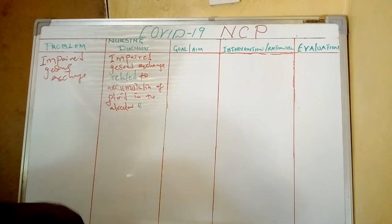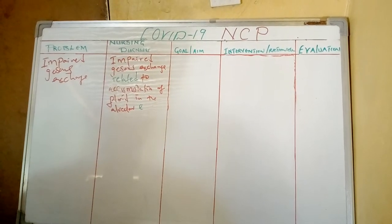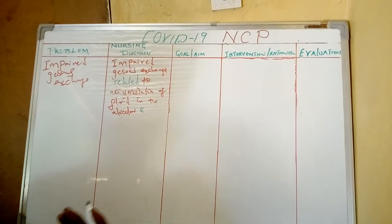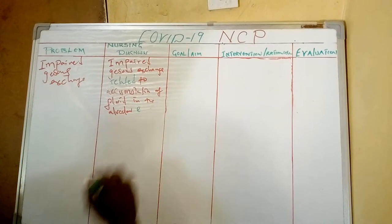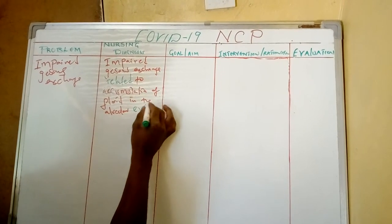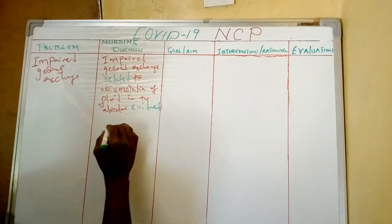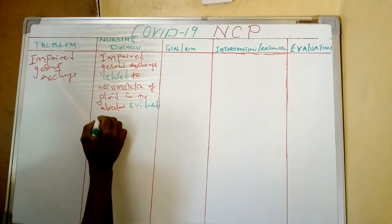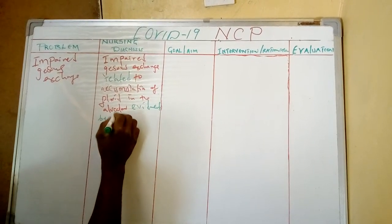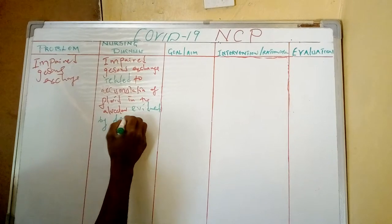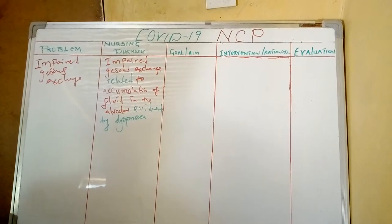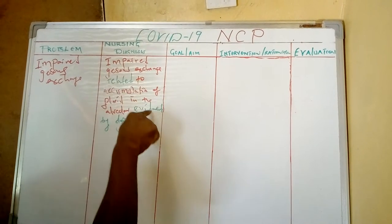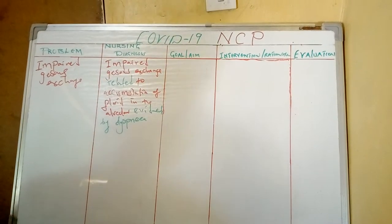The evidence that shows the patient is having problems with breathing is evidenced by dyspnea, or you can say shortness of breath. So the related to and evidenced by components are very vital when writing the nursing diagnosis.